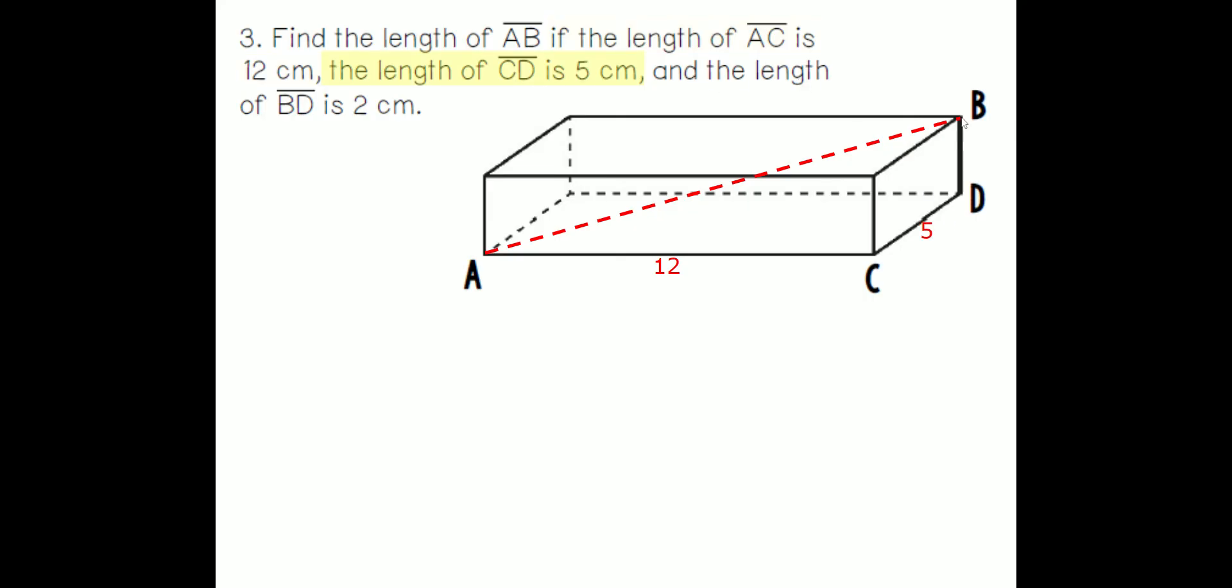Where is BD? B and D. This is 2, so we're going to draw that in. Now we need to find, again, the bottom, the triangle that gets formed on the bottom.